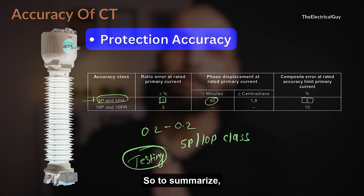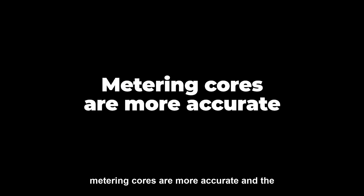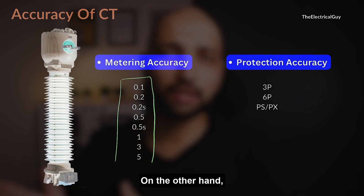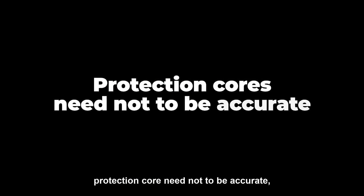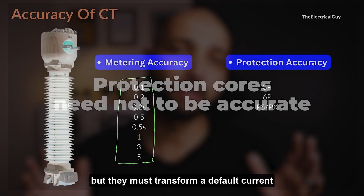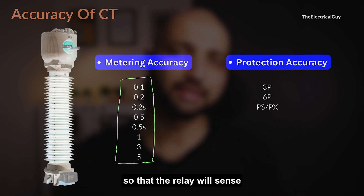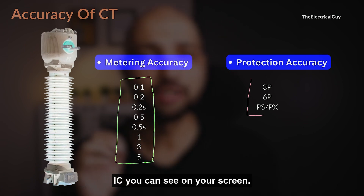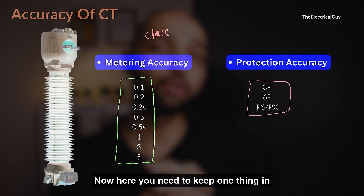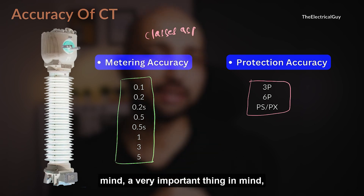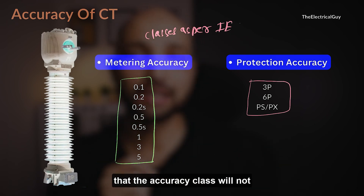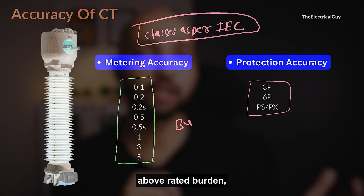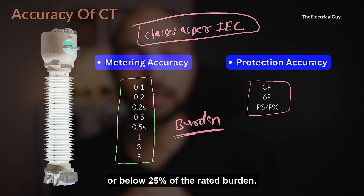To summarize: metering cores are more accurate, with classes defined by IEC standards. On the other hand, protection cores need not be as accurate, but they must transform fault current so that the relay will sense it and clear the fault. One important thing to keep in mind is that the accuracy class will not be guaranteed for burdens above the rated burden or below 25% of the rated burden.